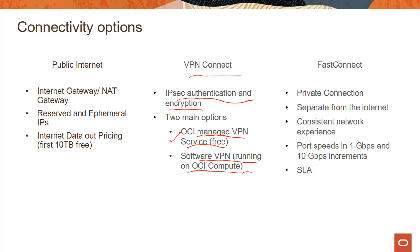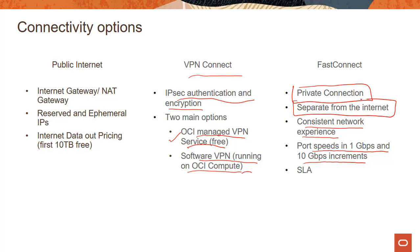The third option is Fast Connect, which as the name specifies gives you consistent, fast network performance. You can get speeds of 1 Gbps and 10 Gbps increments. Fast Connect is a private connection — think of it as having your own high-occupancy vehicle lane on the internet. Your traffic doesn't go through the public internet; you get your own private dedicated connectivity. You can go 10 Gbps and even higher, and of course there is an SLA around that.